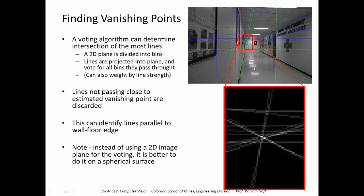In this example we used a two-dimensional voting plane, but it is actually better to use a spherical system. Vertical lines will intersect at a vanishing point that is not on the image — way above it. So you would want to extend the parameter space to be a full sphere around the object.